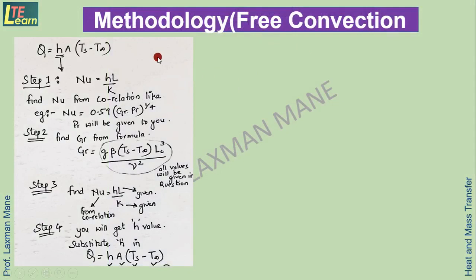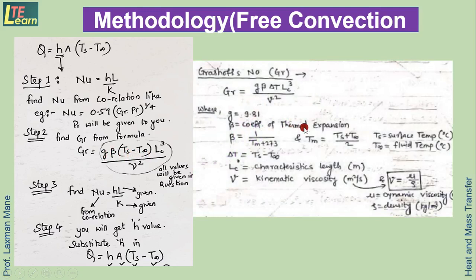For free convection, the same Q formula is used. The Nusselt number correlation is given in terms of Grashof number and Prandtl number. Grashof number formula: Gr = g·β·ΔT·Lc³/ν². Here β (coefficient of thermal expansion) = 1/Tm(K), where Tm = (Ts + T∞)/2 is the mean temperature. ΔT is the surface-to-fluid temperature difference, Lc is the characteristic length, and ν is the kinematic viscosity.